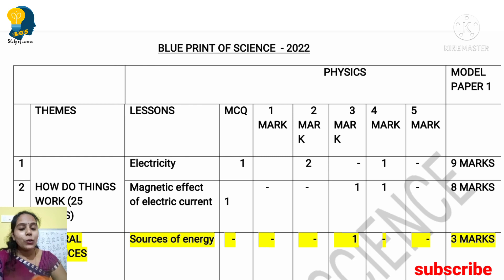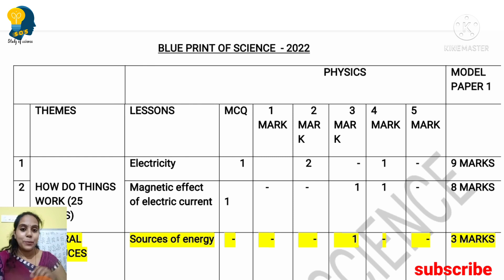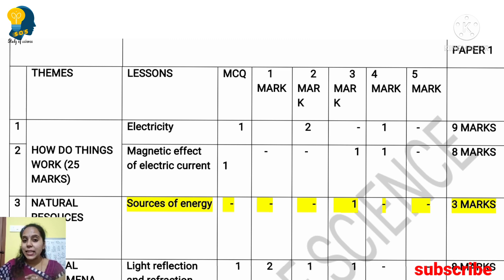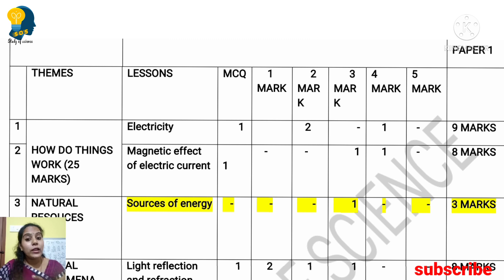What is the overall question paper structure in science? First of all, science is divided theme-wise. The first theme is 'How Do Things Work' and the second is 'Natural Resources.' Under 'How Do Things Work,' there are 3 lessons in physics, and the total marks allotted for this theme is 25 marks.